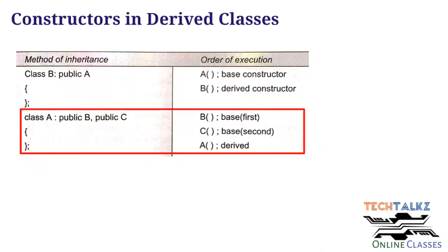In multiple inheritance, the constructors execute in inheritance order. For example: class A colon public B, public C — class A is the derived class, and class B and class C are the base classes. The inheritance order determines execution: first the base constructor of class B executes, then the base constructor of class C, and finally the derived constructor of class A.